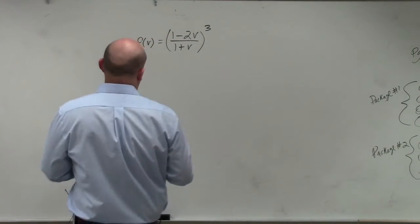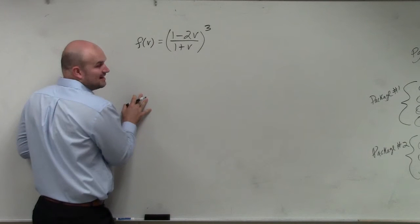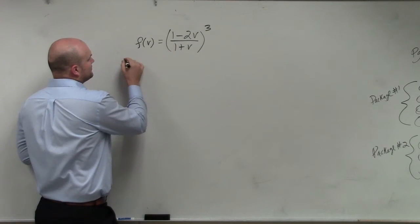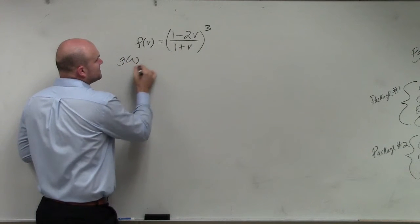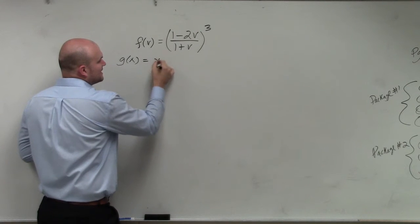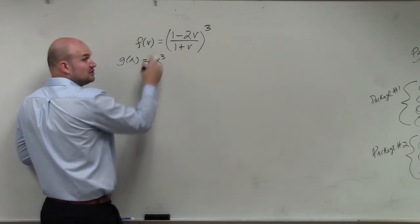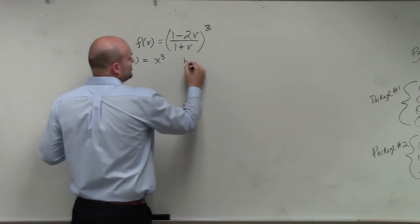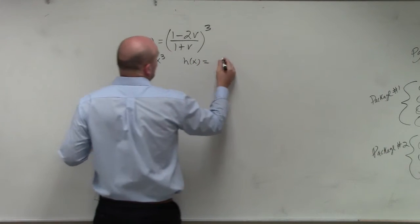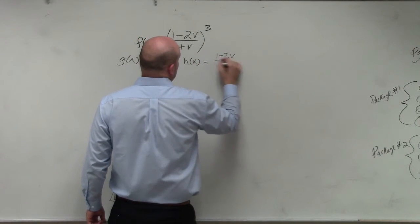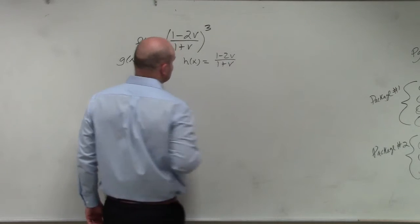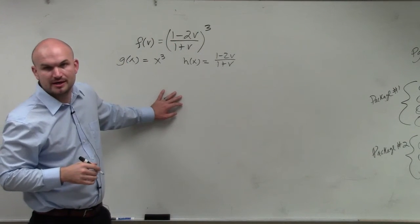So the main thing that I want to see is I'm looking for my inside and my outside function. So I'm going to say that my outside function is x cubed. And if I plugged a function inside of x cubed, which would be h of x, I would get 1 minus 2v over 1 plus v. Would everybody agree with that?